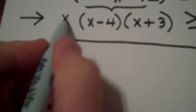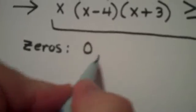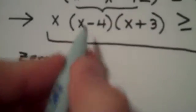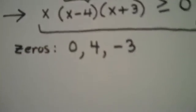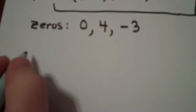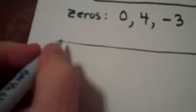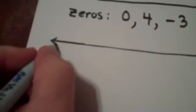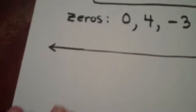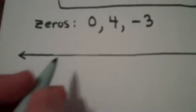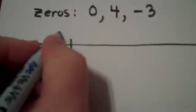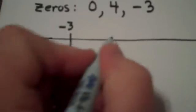Its zeros would be zero, it would be four, and it would be negative three. So what I do at this point is I draw a number line. And not necessarily to scale, but what I do is I put these zeros on the number line. Negative three, zero, and four.